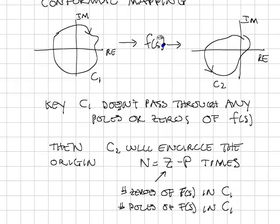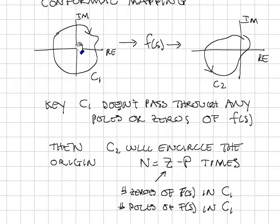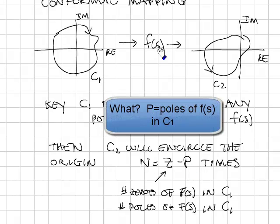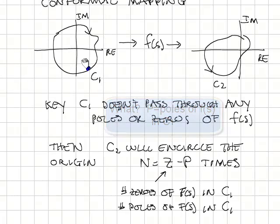So one restriction is C1 doesn't pass through any poles or zeros of F of S. Then C2 will encircle the origin N times, where N is equal to Z minus P. Z is the number of zeros of F of S inside of C1, and P is the number of poles of F of S inside of C1. This is also called the principle of the argument.